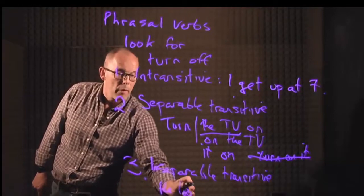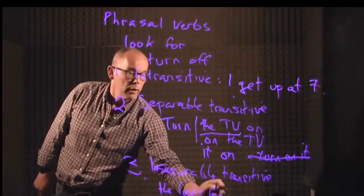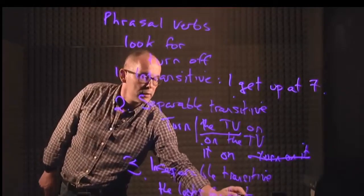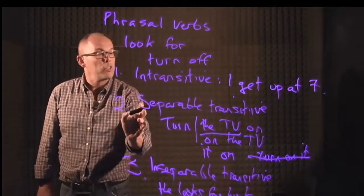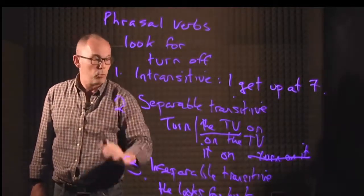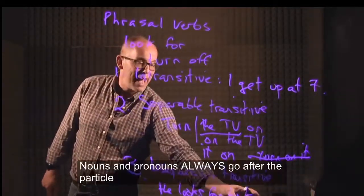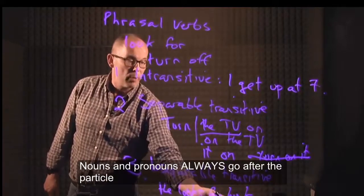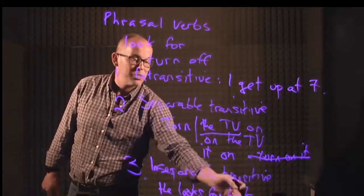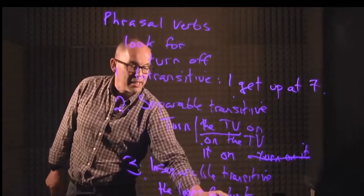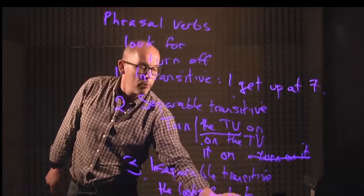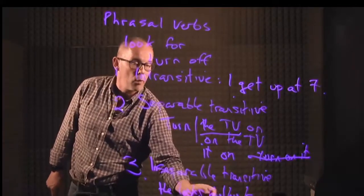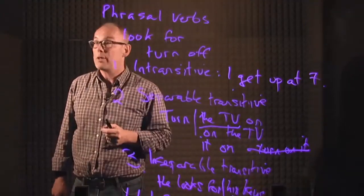He looks for his keys. Now, unlike the separable transitive verb we talked about before, I cannot put this noun between the verb and its particle. 'He looks his keys for' is terrible. And it doesn't matter if it is a noun or a pronoun—both of them go after the particle. Any questions?